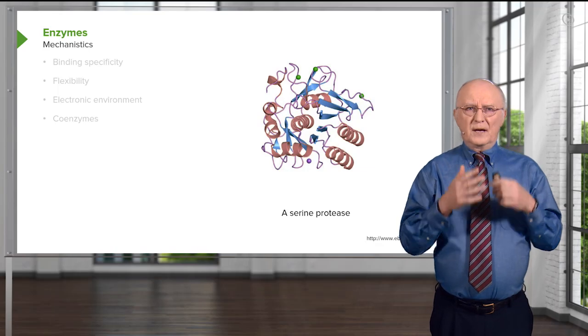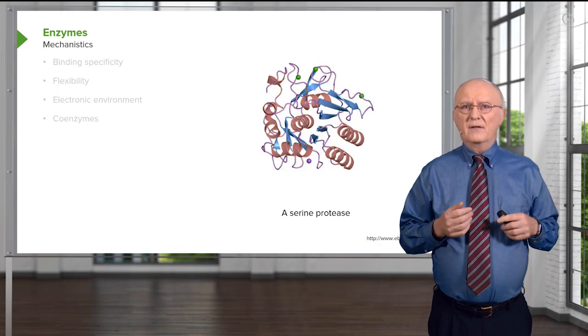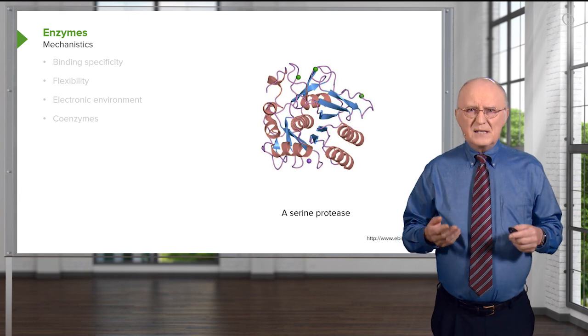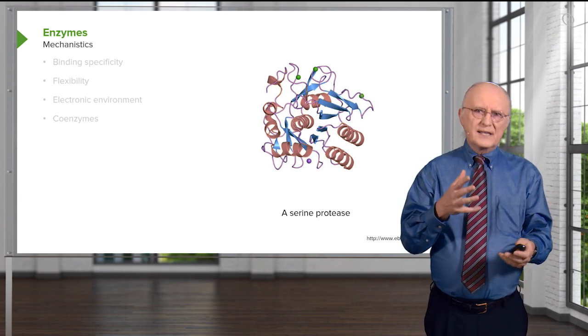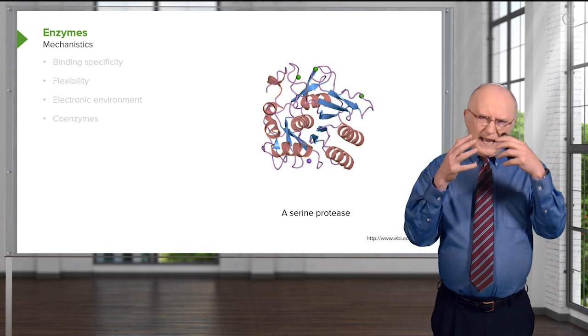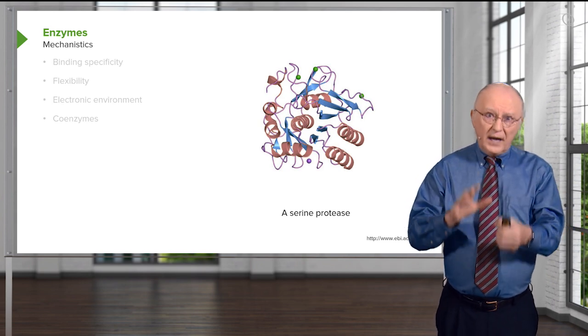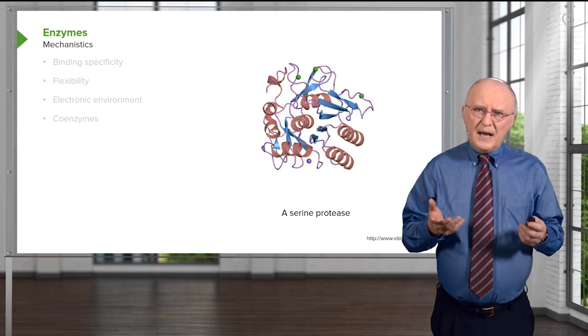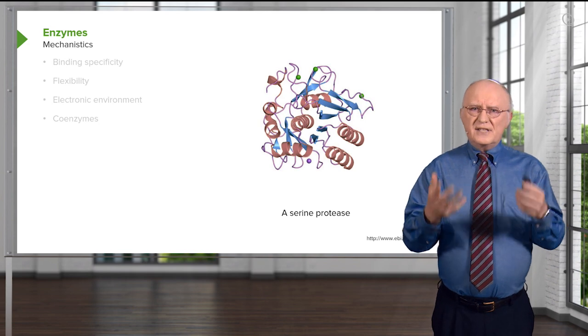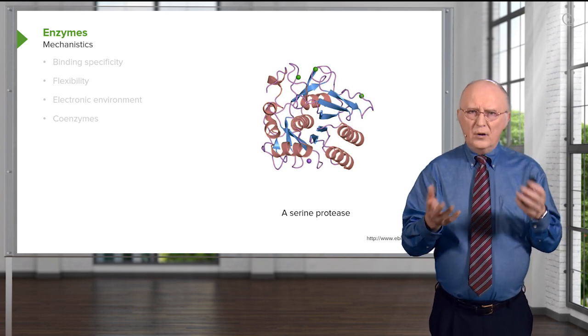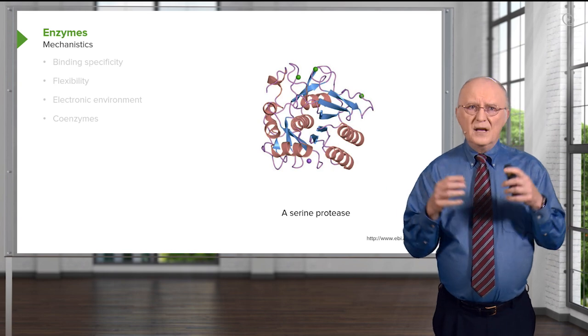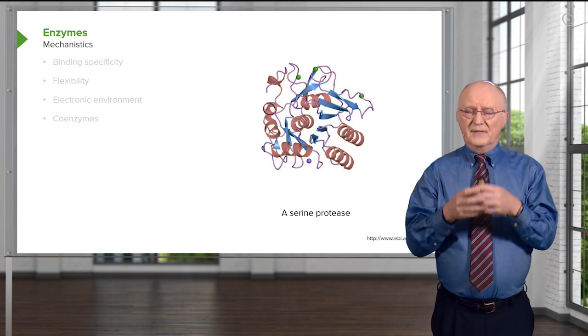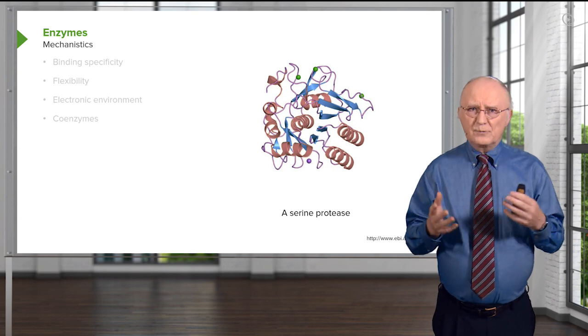Now, I want to go through and spend some time talking about the mechanism of an enzymatic reaction. Mechanism is important to consider because with mechanism, we can begin to see how enzymes are facilitating electronic changes necessary for a chemical reaction to occur. The example I will use is an example of a serine protease. Serine proteases are a class of enzymes that cut proteins. They break peptide bonds. That's what they do.